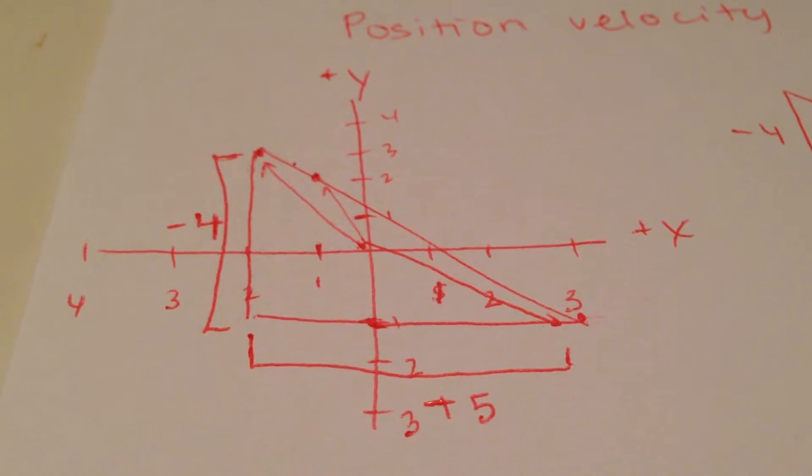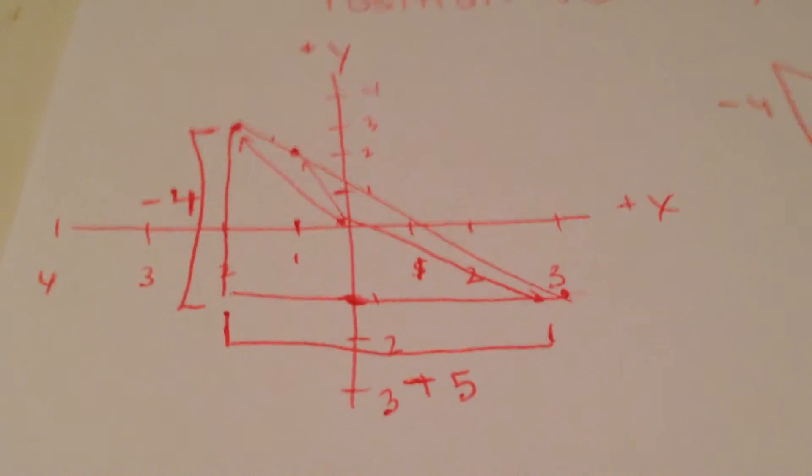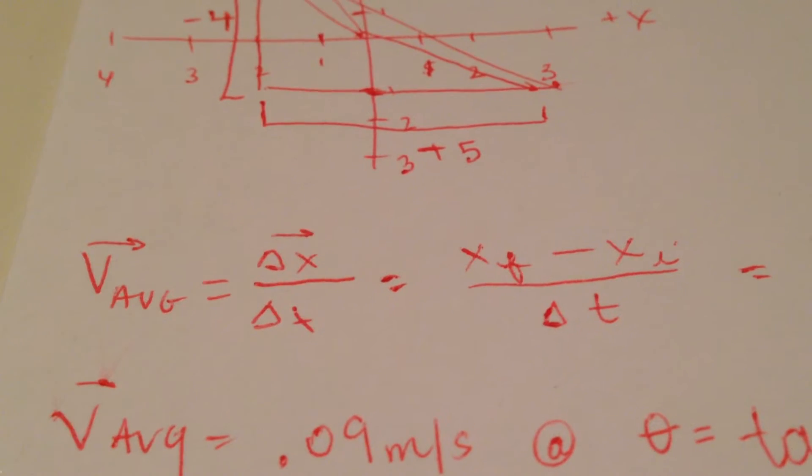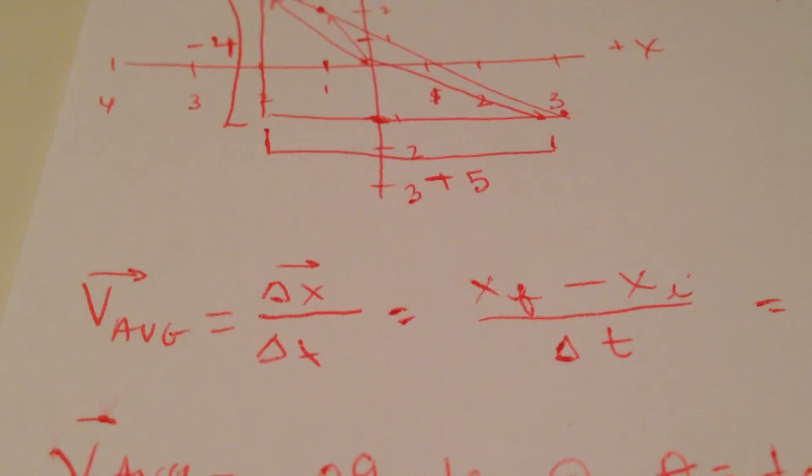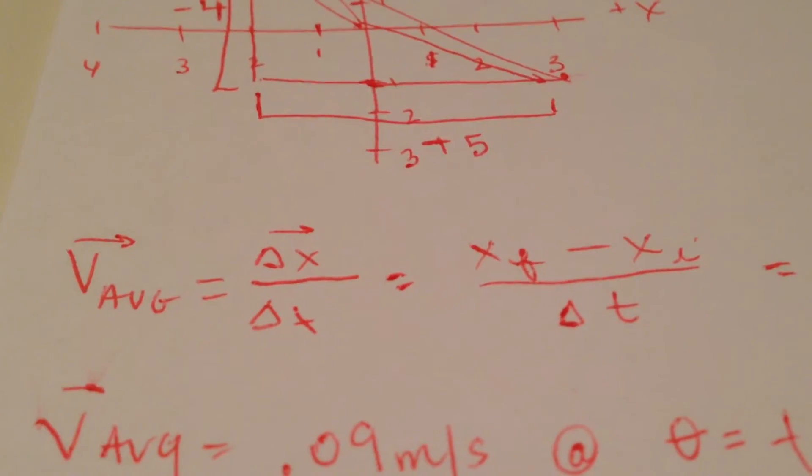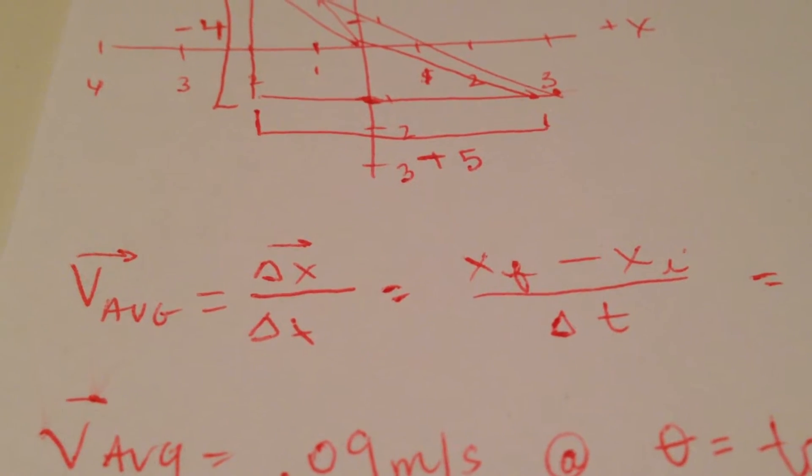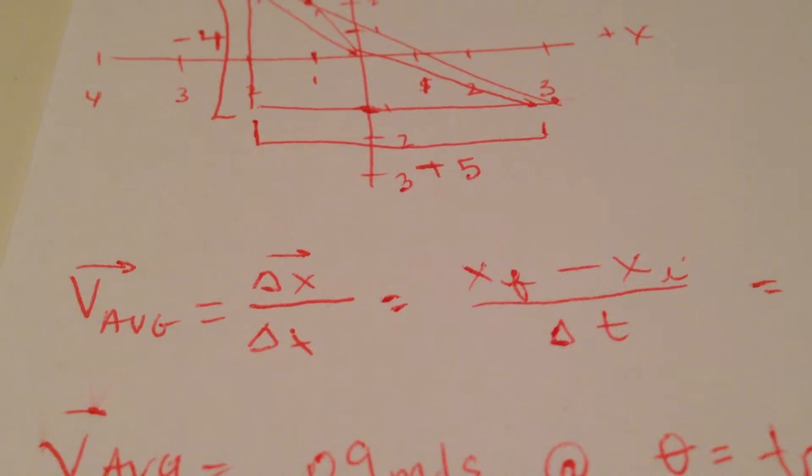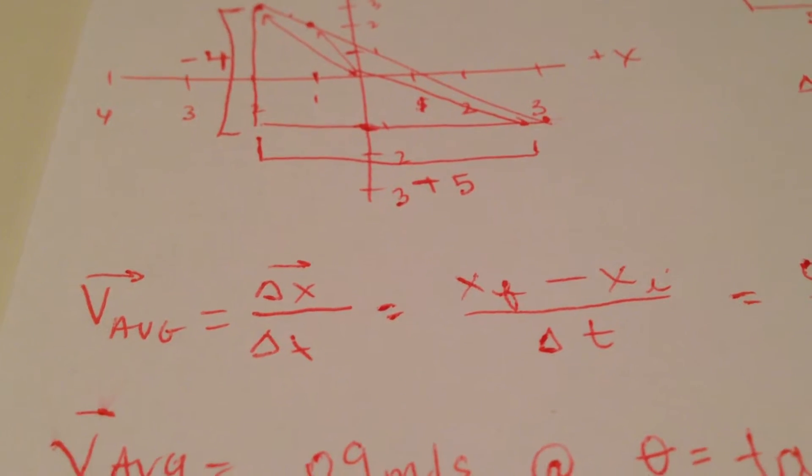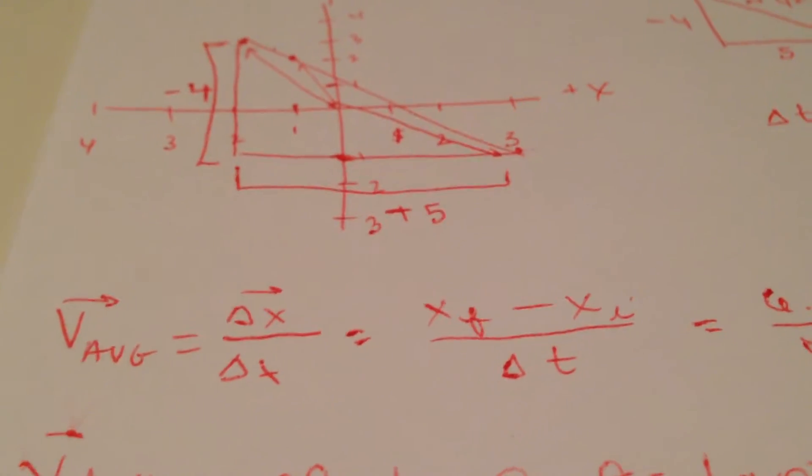In order to find the average velocity we need to know that average velocity equals change in position or change in displacement which is a vector over change in time. And it's important to know that velocity and displacement are vector quantities which means they are going to need to have a direction at the end.